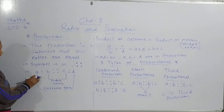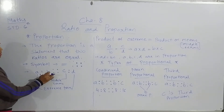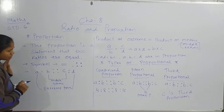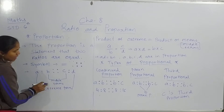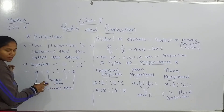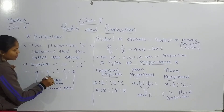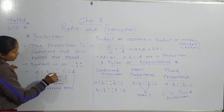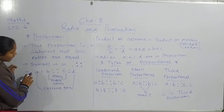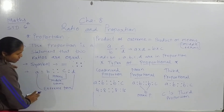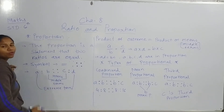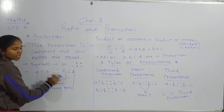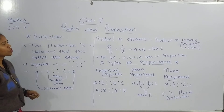Now, a is to b and c is to d. Now students, b and c are called middle terms — another name for them is means. And a and d, these are called extreme terms — they are the outside terms.